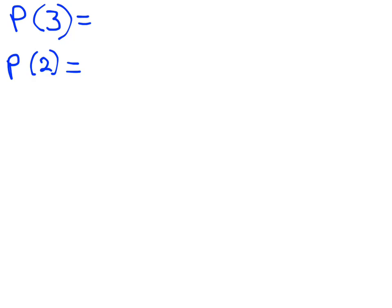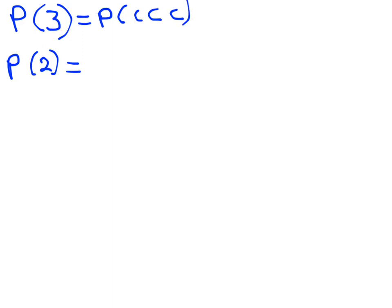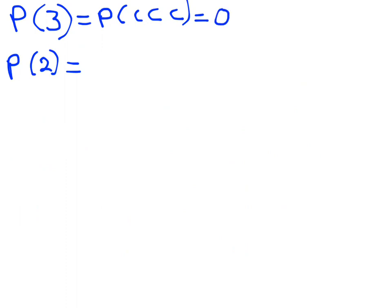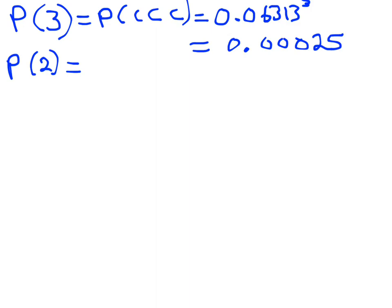Let's start with the probability of three bottles needing to be checked. That means bottle one is checked, and bottle two is checked, and bottle three is checked. We know the probability of a bottle being checked is 0.06313, so it's 0.06313 cubed — multiplied by itself three times — and that gives us a probability of 0.00025.